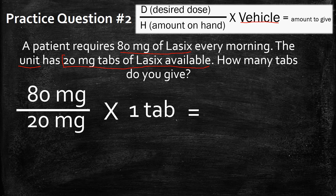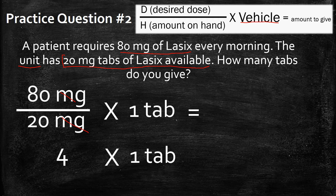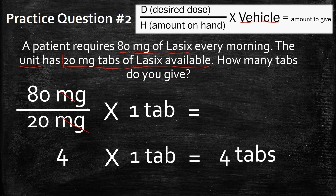Now all we have to do is solve this formula because it's all filled in. 80 divided by 20 gives you 4 — milligrams cancel out — and you multiply that by your vehicle, which is one tab. So 4 multiplied by 1 tab is 4 tabs. Let's go back and back-check this: 4 multiplied by 20 gives you 80, which is your original desired dose.